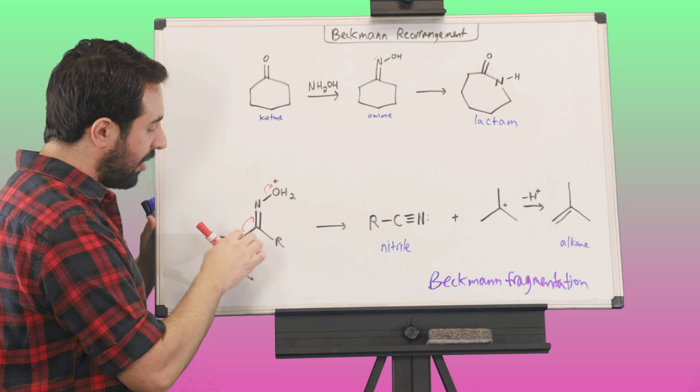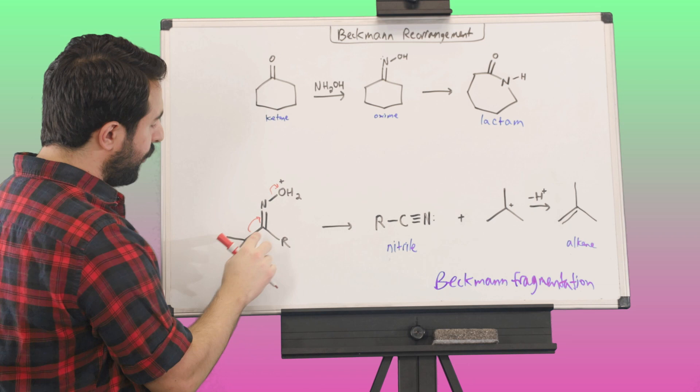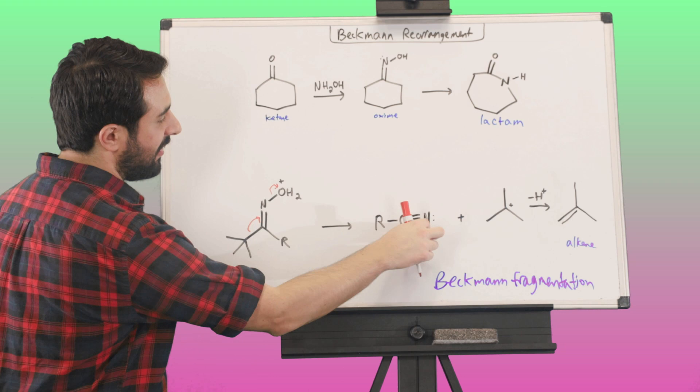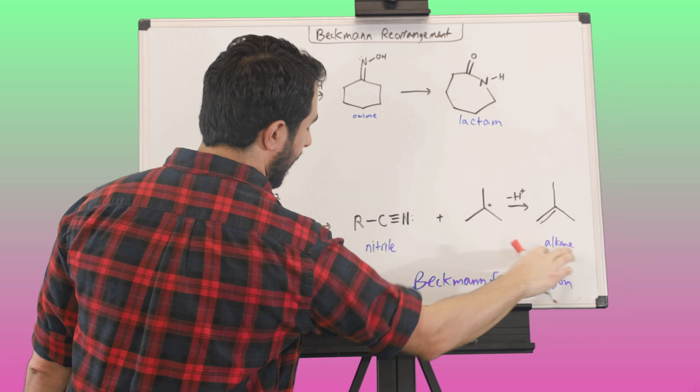...sometimes what we can get is just a fragmentation whereby we do not achieve this nitrogen carbon bond. And so, if you follow, we've got our group, and then this carbon, and then the new bond. We've got a triple bond to nitrogen, and we're just going to be left with a nitrile. And then the tertiary carbocation will be left on its own. We'll lose one of these protons. We'll get the alkene product.